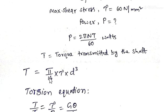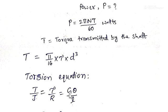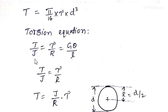Alternatively, you can derive this formula from the basic torsion equation: T/J = τ/r = Gθ/L. Here T is the torque transmitted by the shaft, J is the polar moment of inertia, τ is the maximum shear stress induced at radius r, r is the distance from the center to the outermost layer, G is the modulus of rigidity, θ is the angle of twist in radians, and L is the length of the shaft.